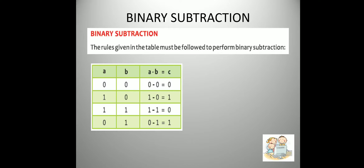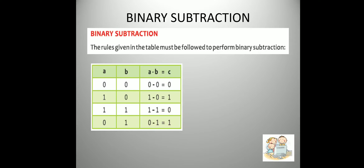Now in the same way, binary subtraction. In binary subtraction, we will subtract the smaller number from the bigger number, and there are certain rules we will follow. In this table you can see: 0 minus 0 is 0, 1 minus 0 is 1, 1 minus 1 is 0, and 0 minus 1 is 1.